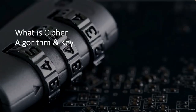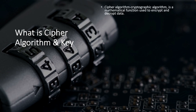Hello and welcome. In this video we shall take a look at what is a cipher algorithm and what is a key. When you need to send your original data, you always encrypt it, and at the other end you need to decrypt it. You need to use a specific encryption algorithm, and then decrypt using the same algorithm. So what actually is a cipher algorithm? There are only two things when talking in terms of cryptography: the cipher algorithm and the key. A cipher algorithm is a cryptographic algorithm — a mathematical function used to encrypt and decrypt data.